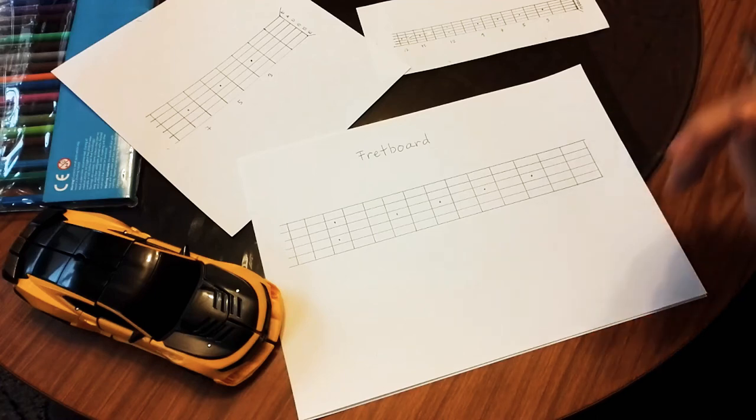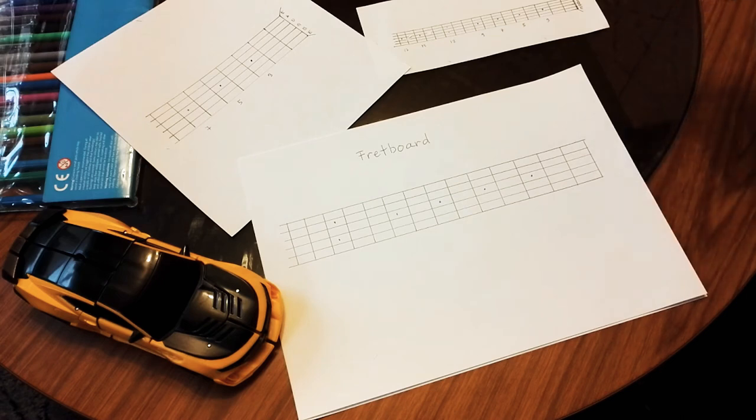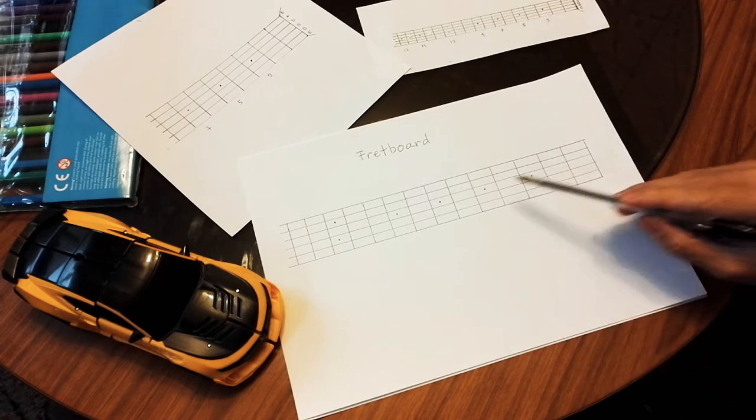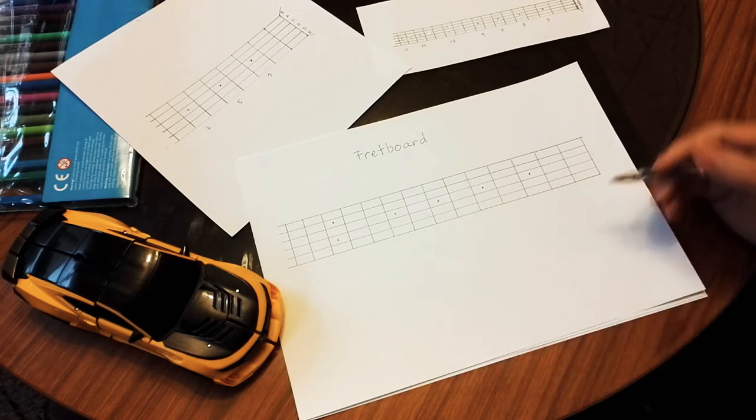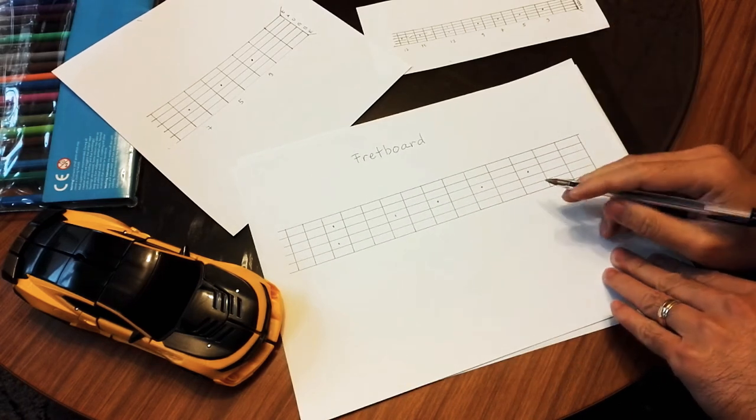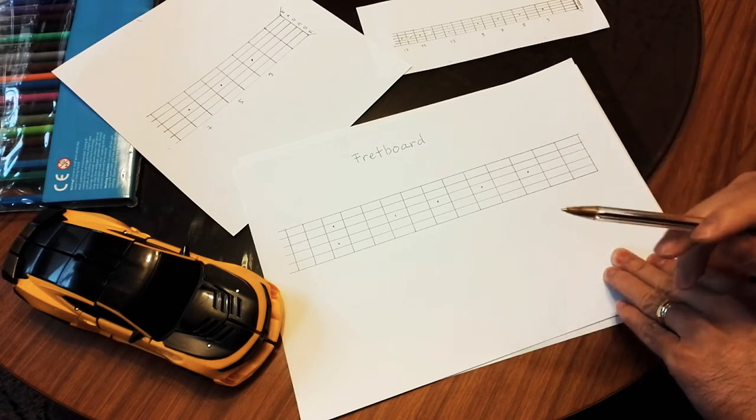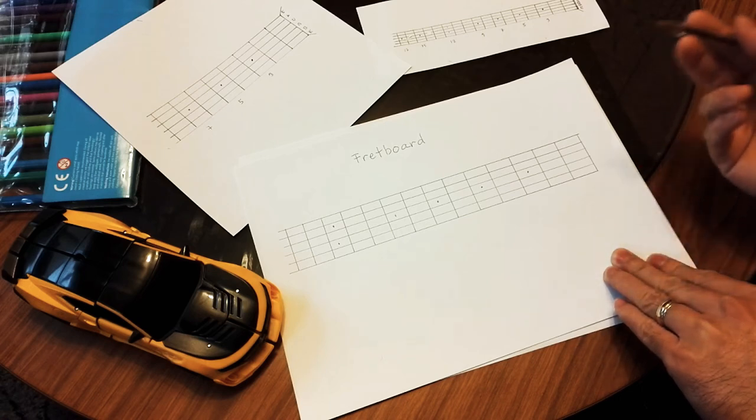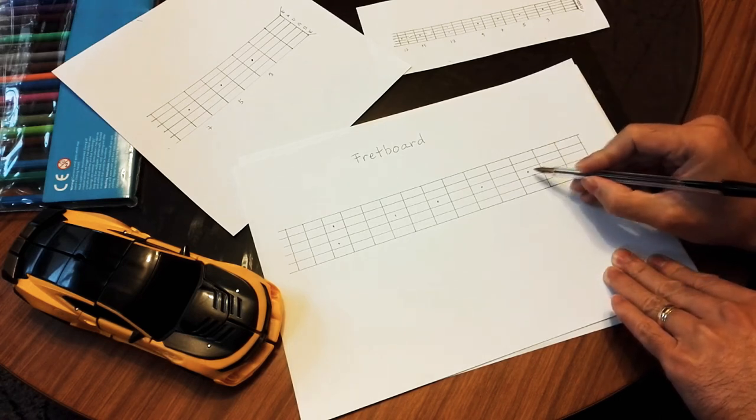Hello everyone, today we're going to be talking about the fretboard. We'll start off with knowing what these dots are for, these markings. They put them there so that it's easy for you to remember which part of the fretboard you're pressing a note or doing a chord.